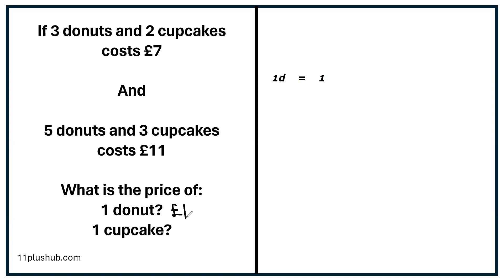Now that I know one doughnut is one pound, have a look at the first part of the question. Three doughnuts must cost three pounds. Now if three doughnuts and two cupcakes cost seven pounds, two cupcakes must cost four pounds — because three pounds plus four pounds is seven pounds. And if two cupcakes cost four pounds, one cupcake must cost two pounds. Very tricky, isn't it? Do not worry if it's still confusing — you are going to get there, trust me.